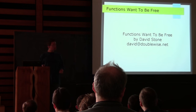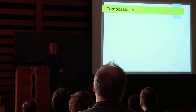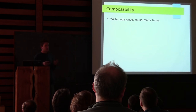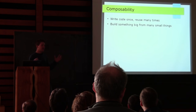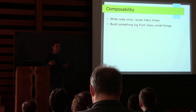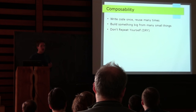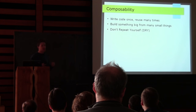One of the main goals in developing software is this idea of composability. The idea is that you can write code once and reuse it many times. You can build something big from many small things. It's a way to manage complexity, to minimize how many things you have to change when you're trying to conceptually just change one thing. It leads you toward the goal of 'don't repeat yourself,' or DRY.